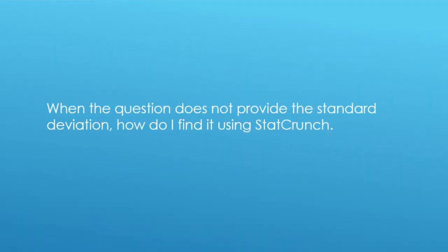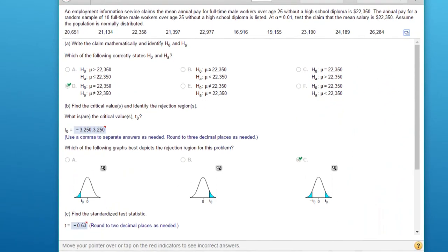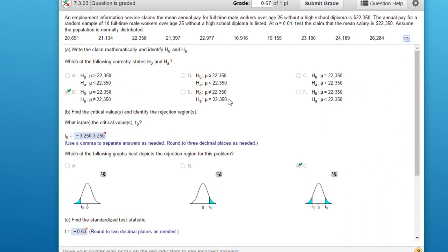Hi Eileen. On this question you have about Problem 7 in section 7.3, you said when the question does not provide the standard deviation, how do I find it in StatCrunch? Let's look at the problem. This is a question in which they want you to use a distribution to determine whether or not the sample supports a claim that the mean salary is $22,350, and they tell us to assume the population is normally distributed.